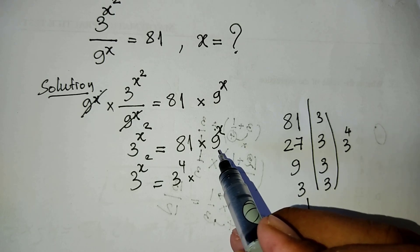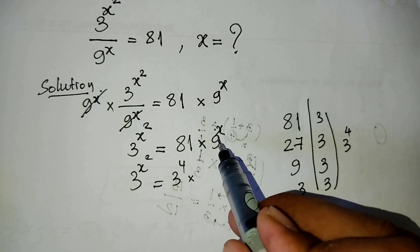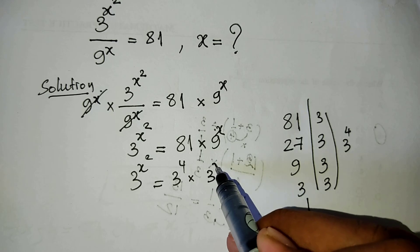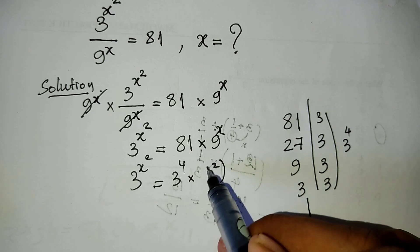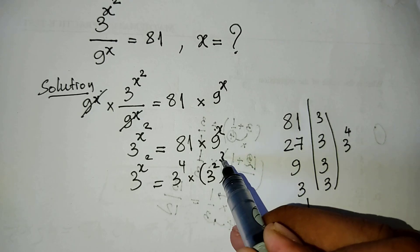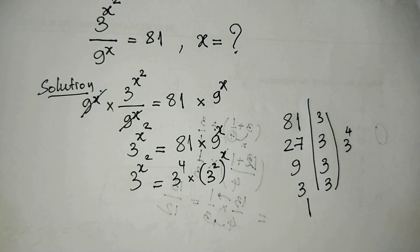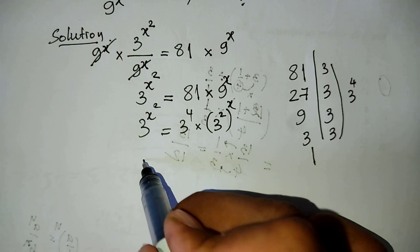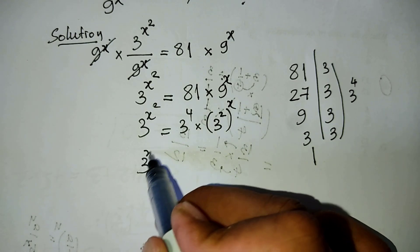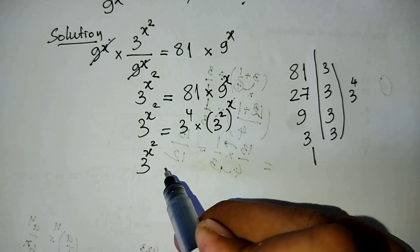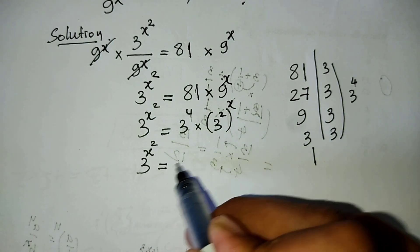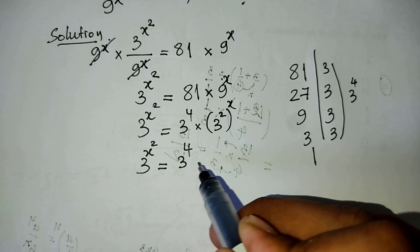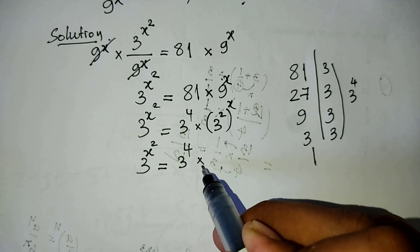9 equals 3 squared. So here we can write 9 power 8 as 3 squared to the power 8. We get 3 power x squared equals 3 power 4 times 3 power 16.